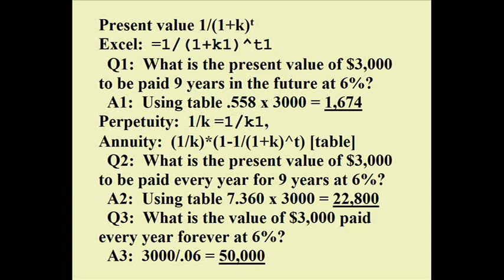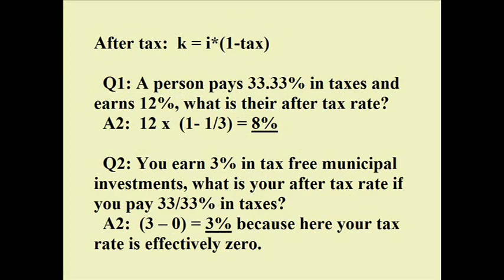Let's look at the present value of $3,000 again, but now paid every year as an annuity. We go to the annuity table — the factors are less than the number of periods. Our factor is 7.360, times $3,000 we get $22,800. For the perpetuity — paid forever at 6% — we simply divide: $3,000 divided by 0.06 gives us $50,000.